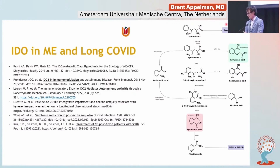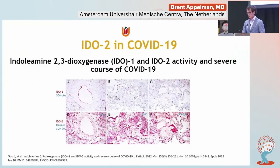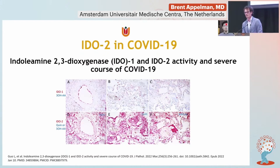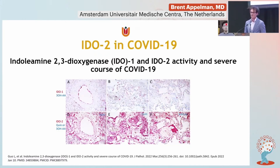There's also a serotonin study showing low serotonin in Long COVID patients, and a study from the Netherlands showing patients treated with SSRIs actually do better — all involving the tryptophan pathway. What we did new was look specifically for IDO2, since normally people only look for IDO1. And again, the story started with COVID-19 itself.